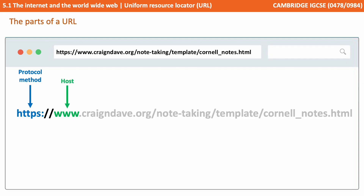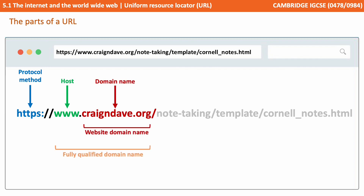Next, we have the host part. Following this, we have the actual domain name, known as the website domain — in this case, CraigAndDave.org. When we add the host and the domain name together, we get what's known as the fully qualified domain name.